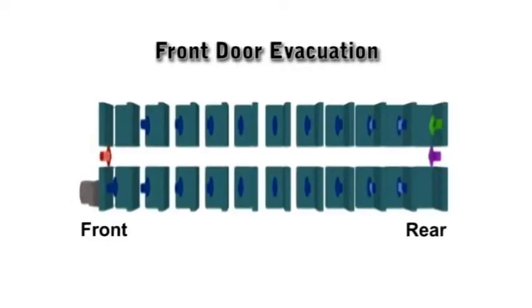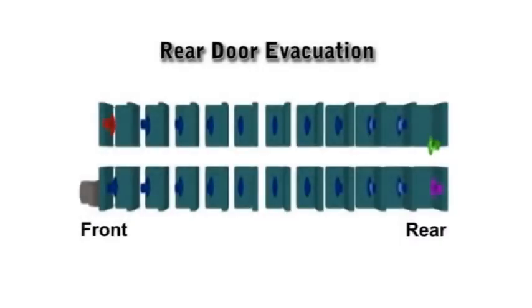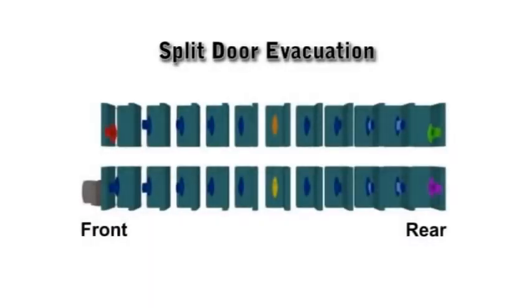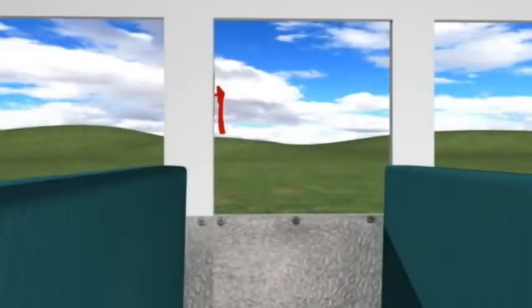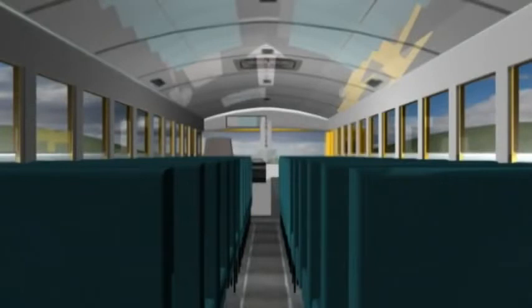Let's quickly review each of the evacuation methods. The front evacuation starts at the rear of the bus, alternating between sides. The rear evacuation starts at the front of the bus, again alternating between sides. The split evacuation starts in the middle of the bus, working towards the ends. As a last resort, you can use the emergency window exit or the roof exit to evacuate the bus. Proceed single file to the safe area, and remember — once you're off the bus, beware of traffic and other potential hazards. In all evacuation methods, the last person off the bus, usually the bus driver, will check the bus to make sure everyone's out.